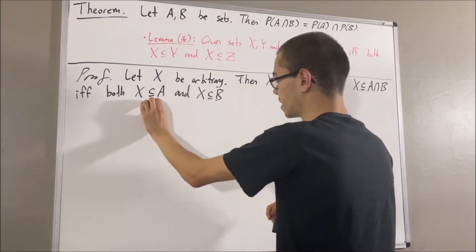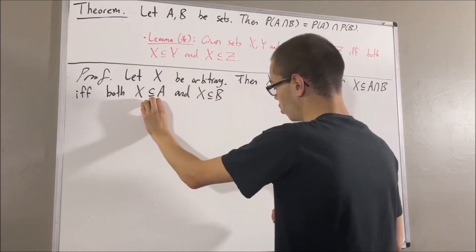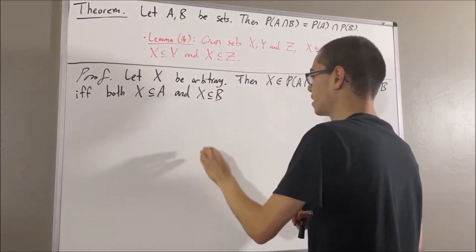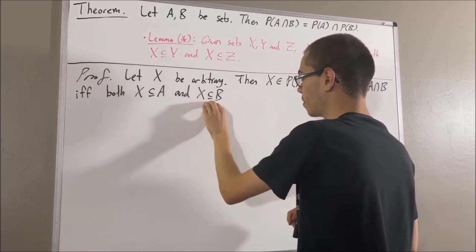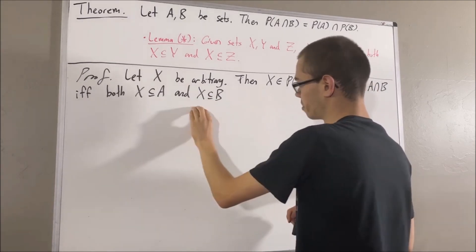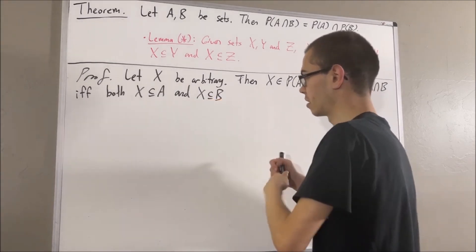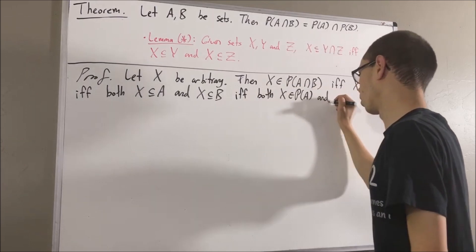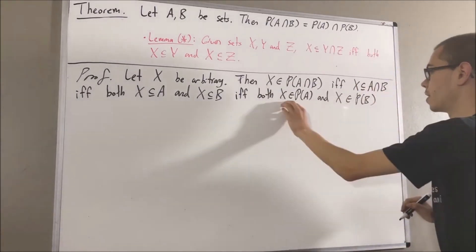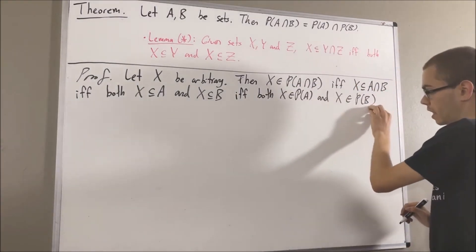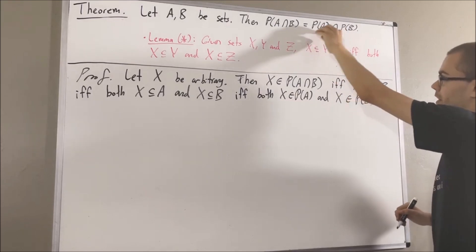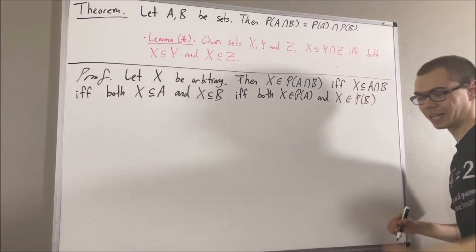To say that X is a subset of A is equivalent to saying X is an element of the power set of A, and to say that X is a subset of B is equivalent to saying that X is an element of the power set of B. And this is equivalent to saying that X is an element of the intersection of the power set of A and the power set of B.